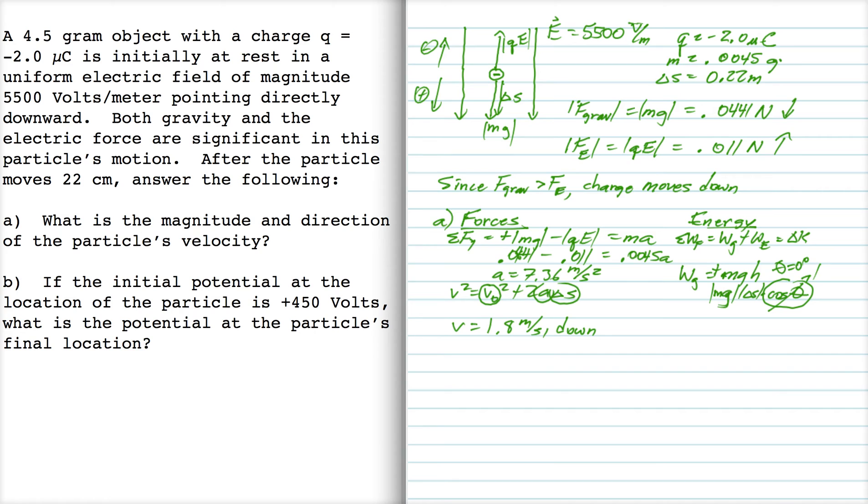Theta is 0 degrees because the angle here between gravity and the displacement is 0. So Mg delta s, if I multiply 0.0045 times 9.8 times 0.22, I get 0.00979.